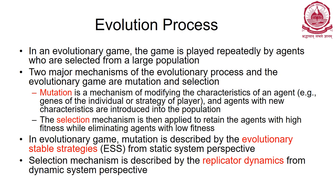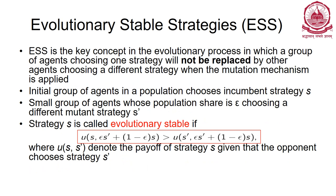The process of evolution has two important mechanisms: mutation and selection. Mutation is a mechanism of modifying the characteristics of an agent - for example, changing a dove to start behaving like a hawk. Selection is a mechanism applied after mutation to retain agents with higher fitness while eliminating agents with lower fitness, essentially showing who is surviving. In evolutionary games, mutation is described by evolutionary stable strategy and selection is described by replicator dynamics.